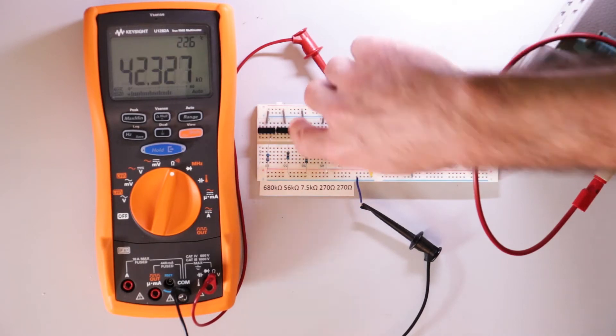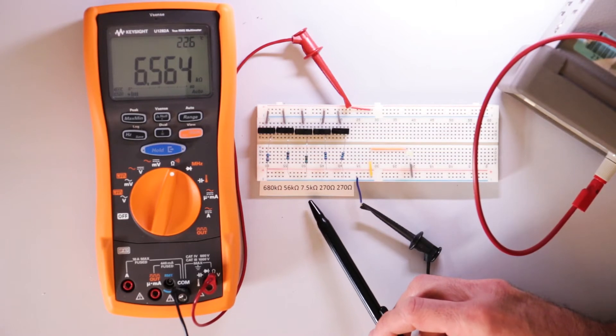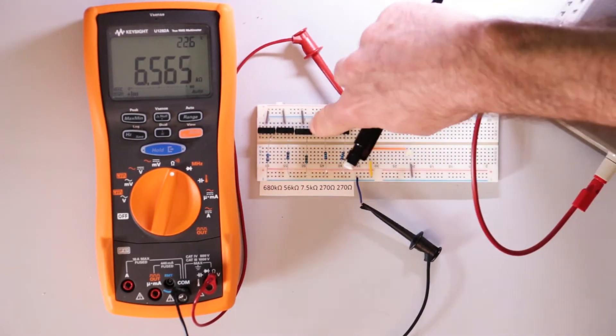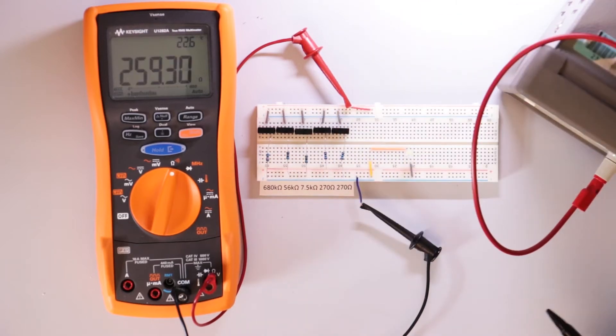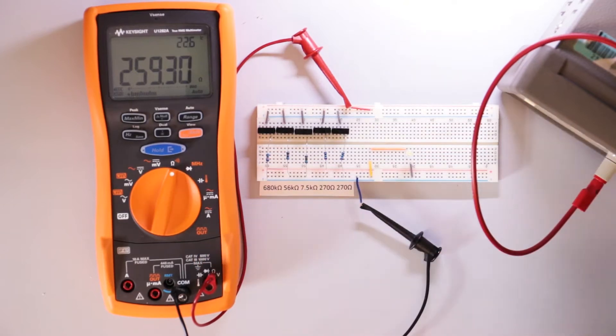I'll put the third resistor in parallel. So 680 kilohm, 56 kilohm, and now a 7.5 kilohm for the total resistance of 6.5 kilohm. And now a 270 ohm. The total resistance or equivalent resistance is 259 ohms.